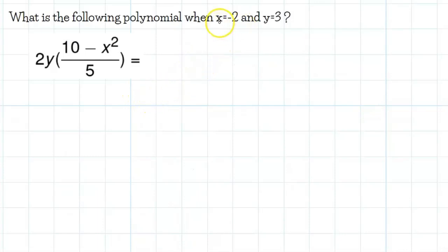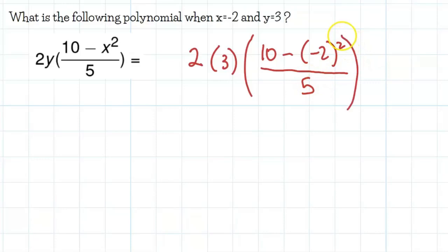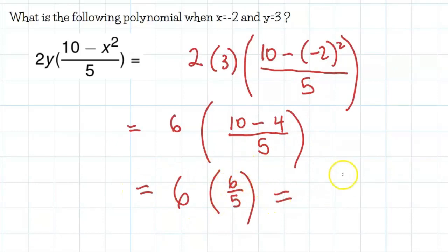One more example here. We're using x is minus 2 and y is 3 again, so let's rewrite this as 2 times 3. And in big brackets, 10 minus negative 2 squared all over 5. Okay, so that's going to be 6 times 10 minus negative 2 squared is 4. And we could leave that in brackets, but we don't need that anymore because we know we're going to subtract 4. All over 5 is equal to 6 times 6 fifths. So this could be 36 over 5. Kind of a hairy one, but you get the point.